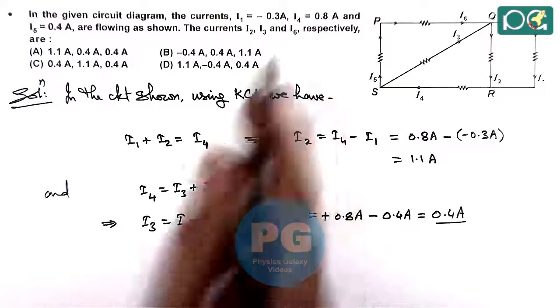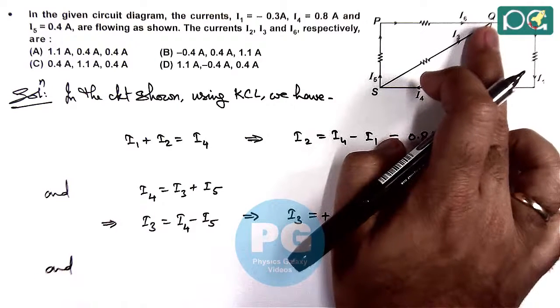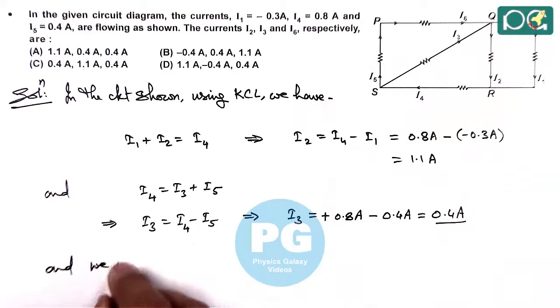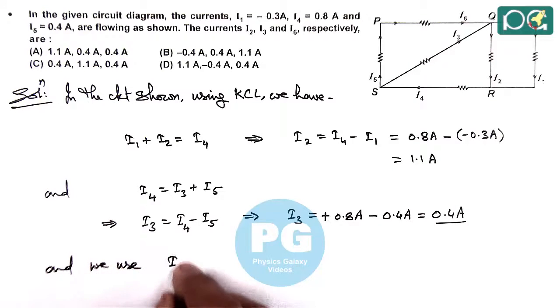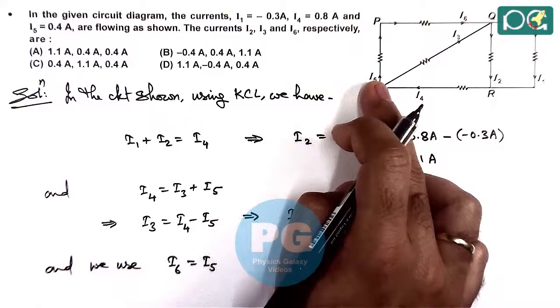However, we can calculate the value of i6 also. So here if we apply the KCL, we can use i6 is equal to i5, because there is a single branch, so there can never be different currents.